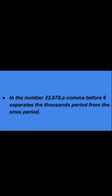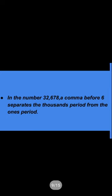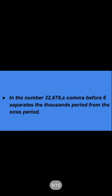In this number, 32 is in the 1000s period and 678 is in the 1s period. We read the 1000s period — 32 — together, and 678 in the 1s period. So we read the number as thirty-two thousand, six hundred seventy-eight: 32,678.